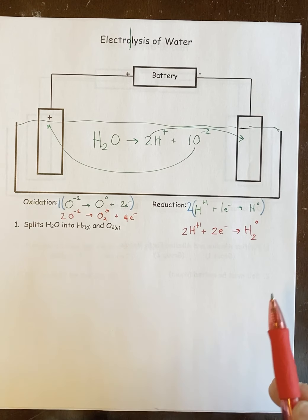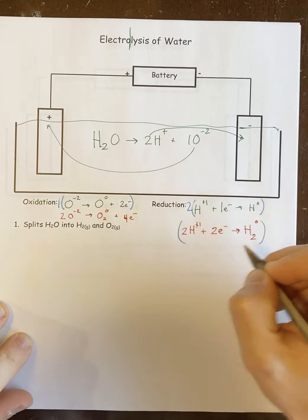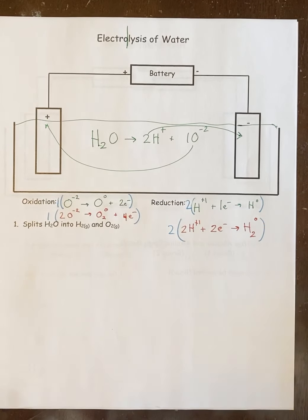And again, the balancing coefficients would actually still be the same. We would still need to essentially do this two and one in order to balance these because there's twice as many. But that's pretty much it for electrolysis of water.